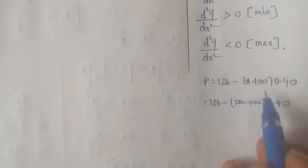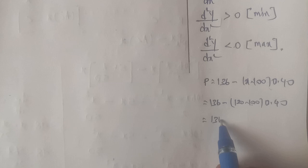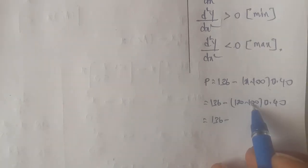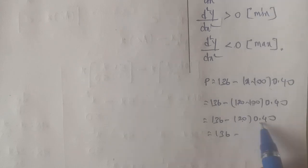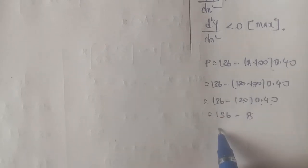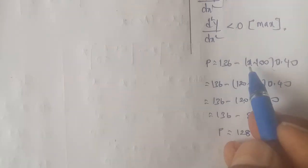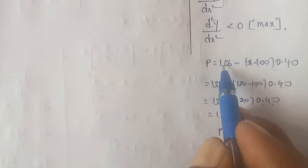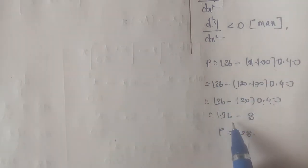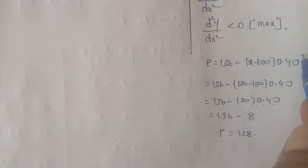For example, with 120 passengers, the excess is 120 minus 100 = 20. The discount is 20 times 0.40 = 8 rupees. So the amount per passenger is 136 minus 8 = 128 rupees. If you have 120 passengers, the per ticket price is 128 rupees.